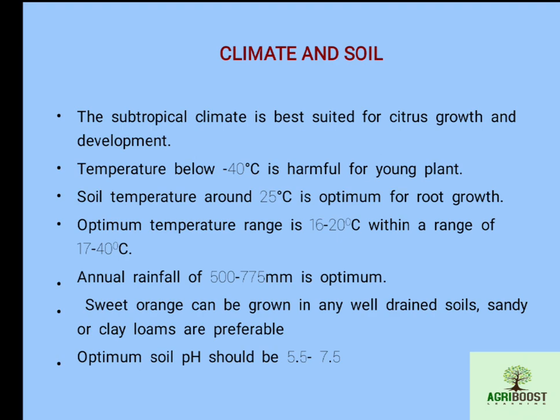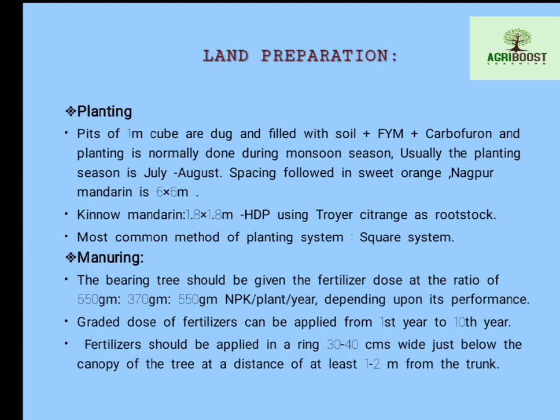Sweet orange can be grown in well-drained sandy loam or clay loam soils, which are best suitable for citrus cultivation. The optimum soil pH required for citrus cultivation is 5.5 to 7.5.